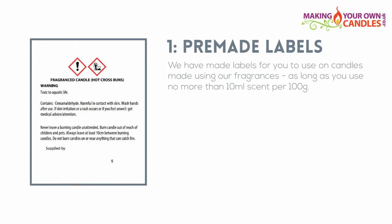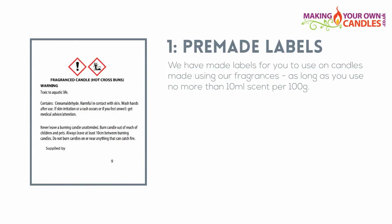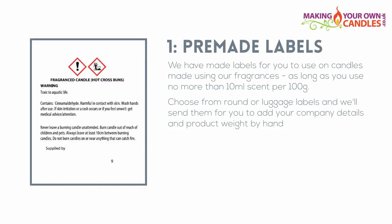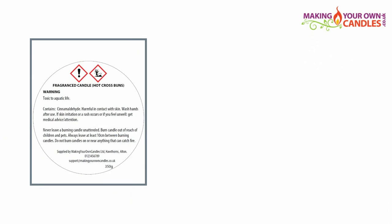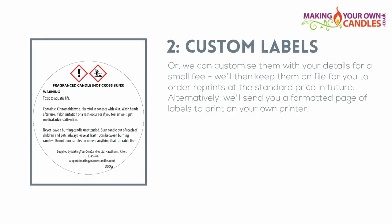Let's begin with our pre-made labels. We've made labels for you to use on candles made using our fragrances, and you can use them as long as you don't include more than 10ml of scent per 100g of wax — which is the maximum the wax can carry anyway. You can choose from round labels or luggage tag labels. We'll send them for you to add your company details and product weight by hand, or we can customise those labels with your details for a small fee, and we'll keep them on file for you to order reprints at the standard price in future.